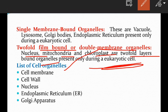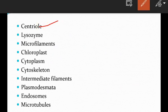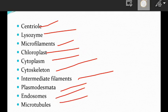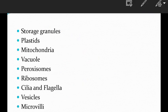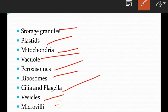Just look at this list of cell organelles: cell membrane, cell wall, nucleus, endoplasmic reticulum, Golgi apparatus, centriole, lysosome, microfilaments, chloroplast, cytoplasm, cytoskeleton, intermediate filaments, plasmodesmata, endosomes, microtubules, storage granules, plastids, mitochondria, vacuole, peroxisomes, ribosomes, cilia and flagella, vesicles, and microvilli.